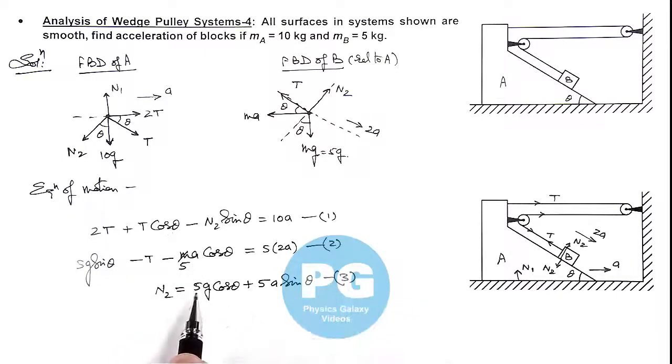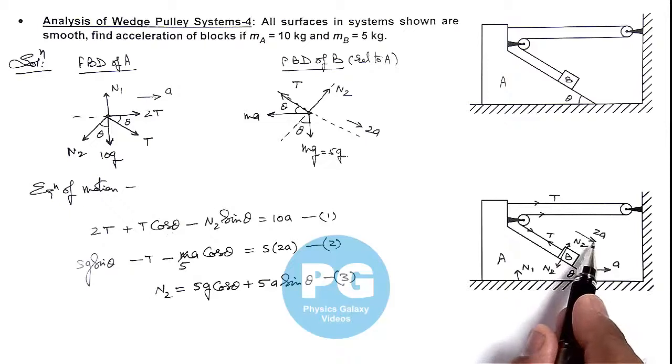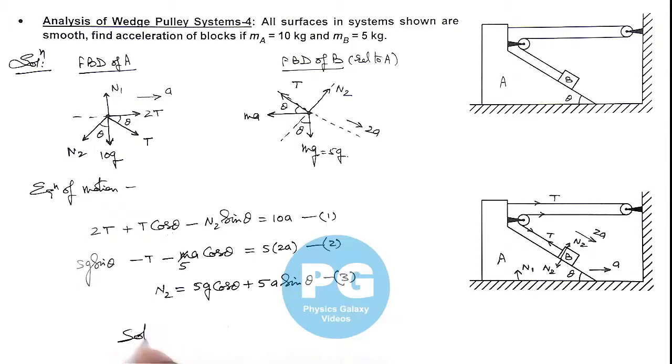Now solving these three equations we can directly get the value of acceleration. Solving 1, 2, and 3, we get the value of acceleration as the final value we'll get is 2g sin theta divided by 9 plus 5 cos theta. And here I am leaving it as an exercise for you to evaluate this result. So you can solve these equations and verify the value of aA.